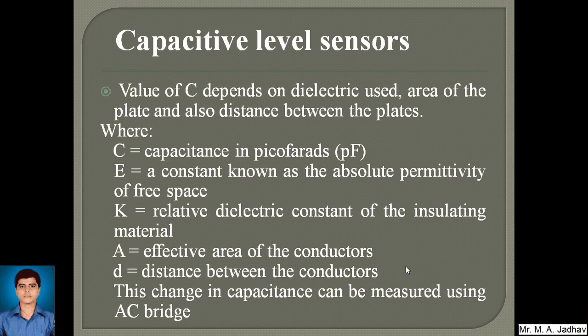The value of C, that is capacitance, depends on the dielectric used, the area of the plates (overlapping area), and the distance between the plates. The notations are: C is the capacitance of the capacitor measured in Farads, here in picofarads; E is the constant known as absolute permittivity of free space; K is the relative dielectric constant of the insulating material; A is the effective area of the conductors; and D is the distance between the conductors.